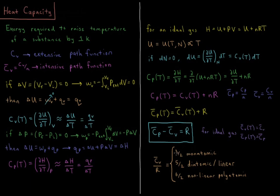The constant pressure heat capacities are each one R higher: 5/2 R for monatomic, 7/2 R for diatomic or linear, and 4R for non-linear polyatomic ideal gases.